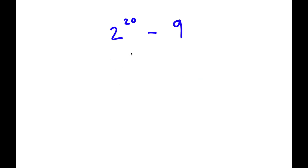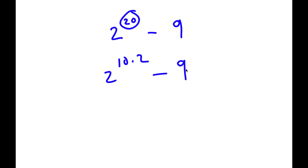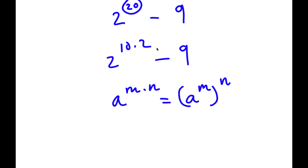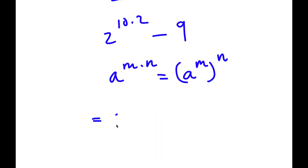In this problem, I have 2 to the power of 20 minus 9. The first thing I'm going to do is rewrite 20 as 10 times 2. So now I have 2 to the power of 10 times 2, minus 9. Since a to the power of m times n equals a to the power of m to the power of n, 2 to the power of 10 times 2 becomes 2 to the power of 10, to the power of 2. And I'm going to rewrite 9 as 3 squared.